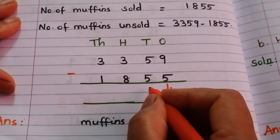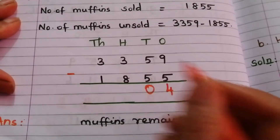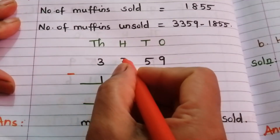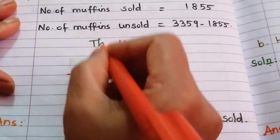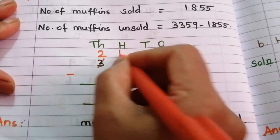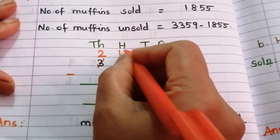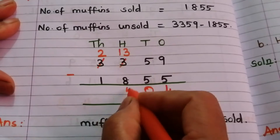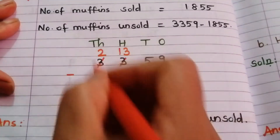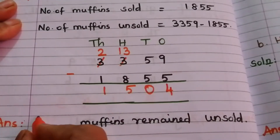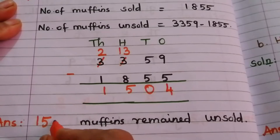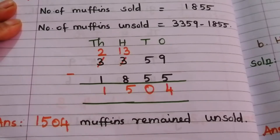We cannot subtract 8 from 3, so borrow from the next digit. That 3 becomes 2 and this 3 becomes 13. 13 minus 8 = 5. 2 minus 1 = 1. So the answer is 1,504 muffins remained unsold.